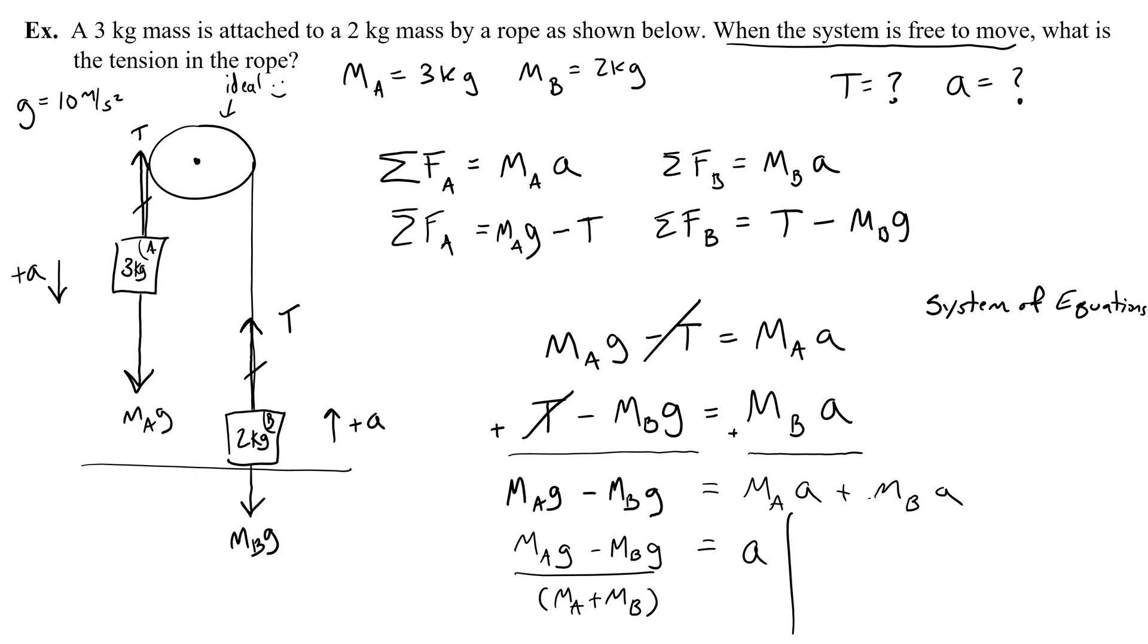To find it, I'm just going to plug all those numbers in. Acceleration equals the mass of A is 3kg times G is 10, so 3 times 10 is 30, so 30 newtons. Minus the mass of B, 2kg times G, 10, is 20 newtons, so minus 20 newtons. And then divide that by the combined mass of A and B, which is 5kg, 3 plus 2. So 30 minus 20 is 10 newtons over 5kg, so my acceleration is 2 meters per second squared.